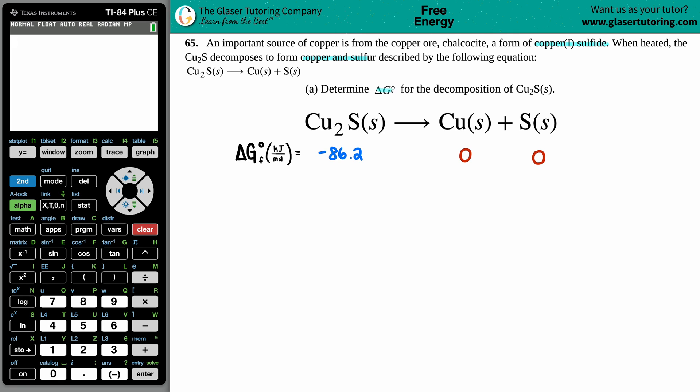We have to determine the ΔG° for the decomposition of Cu₂S. We can't do this equation without going to the back of a textbook to find the ΔG values for each individual component. For Cu₂S solid, it has a ΔG of -86.2, for copper it's zero, sulfur is also zero. I can do that because there's a degree symbol here, which means standard—standard is at 1 atm and 298.15 Kelvin.